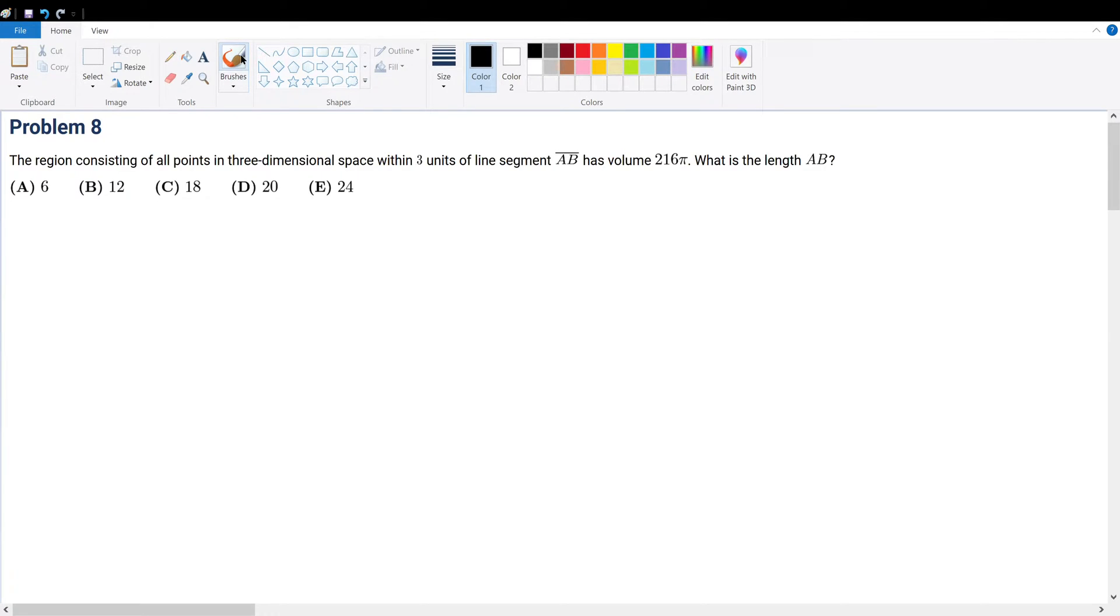Problem eight: The region consisting of all points of three-dimensional space within three units of line segment AB has a volume 216π. What is the length of AB? Three-dimensional space is actually not too bad if you can actually just physically consider what it will look like.